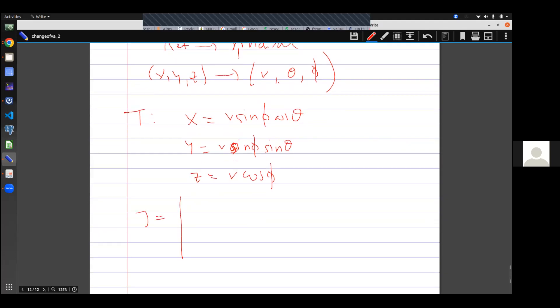And so what is our Jacobian? Our Jacobian will be giving us ∂x/∂r, ∂x/∂θ, ∂x/∂φ, ∂y/∂r, ∂y/∂θ, ∂y/∂φ, ∂z/∂r, ∂z/∂θ, ∂z/∂φ.